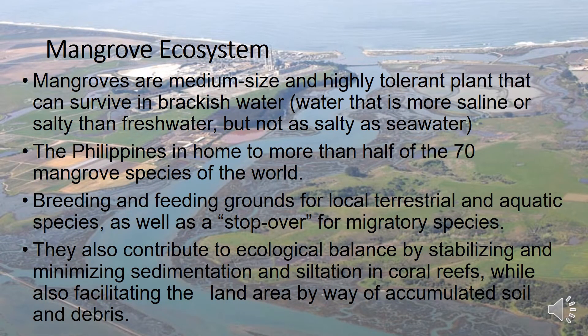Mangrove ecosystem. Mangroves are medium-sized and highly tolerant plants that can survive in brackish water. Brackish water means water that is more saline or salty than fresh water, but not as salty as sea water. The Philippines is home to more than half of the 70 mangrove species of the world. It is a breeding and feeding ground for local terrestrial and aquatic species, as well as a stopover for migratory species. They also contribute to ecological balance by stabilizing and minimizing sedimentation and siltation in coral reefs, while also facilitating the land area by way of accumulated soil and debris.